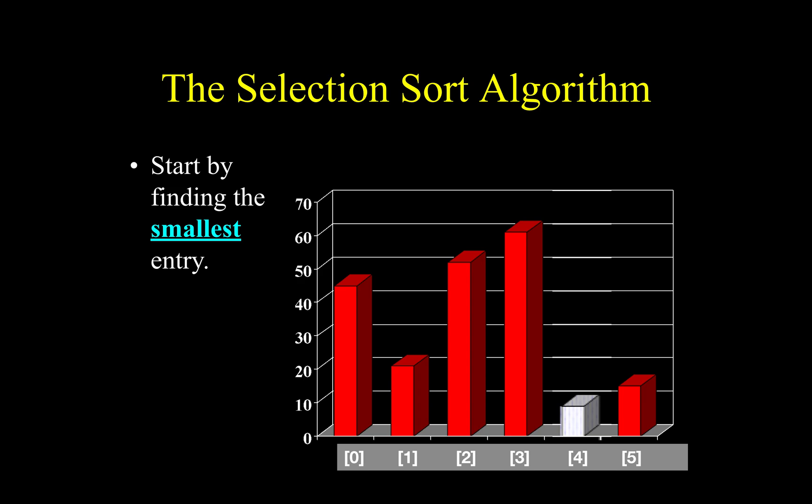You iterate through the array and you find the smallest entry, which is in the fourth index. Next, you swap the smallest with the first entry, so you bring the smallest to the first entry.